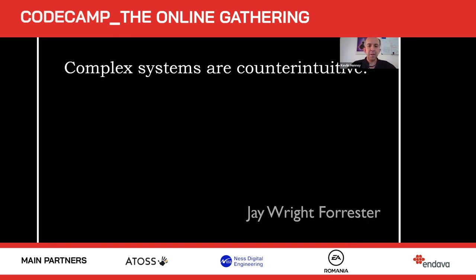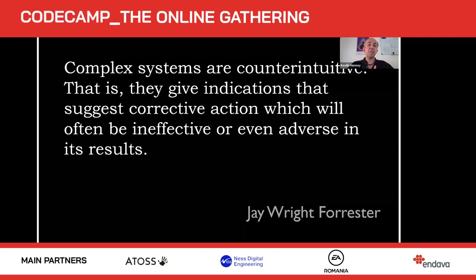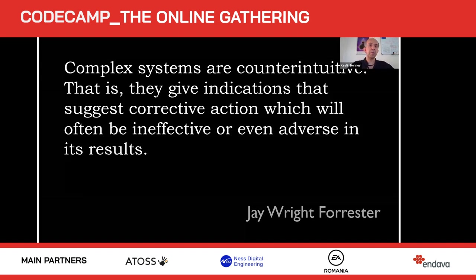The CASE principle states that in highly entangled systems, changing anything changes everything. They are not modular. Adding, removing, or modifying something can have significant global effects, undermining the assumption of locality and modularity — the principles by which we reason and which every one of our design paradigms embodies. As Jay Wright Forrester, one of the pioneers of computer science and systems engineering, observed: complex systems are counterintuitive — they give indications suggesting corrective action that will often be ineffective or even adverse in its results.